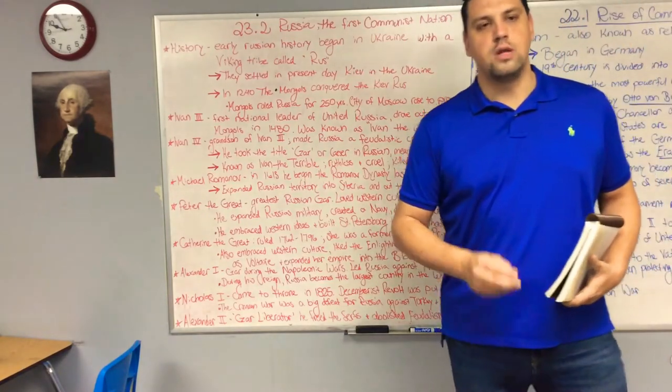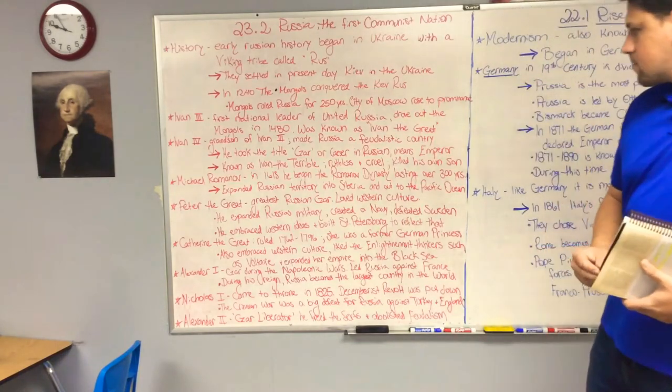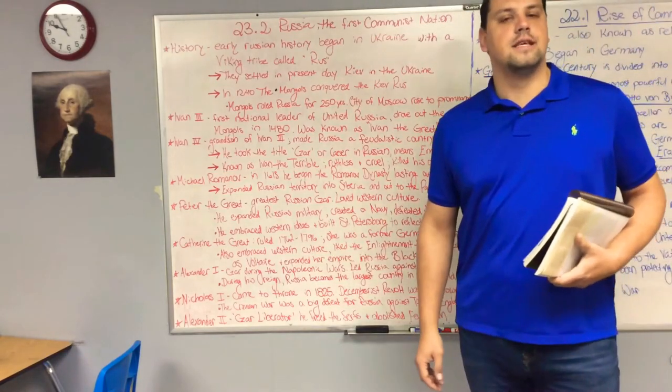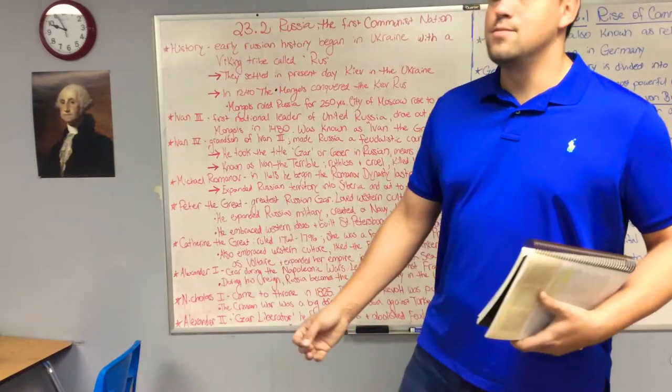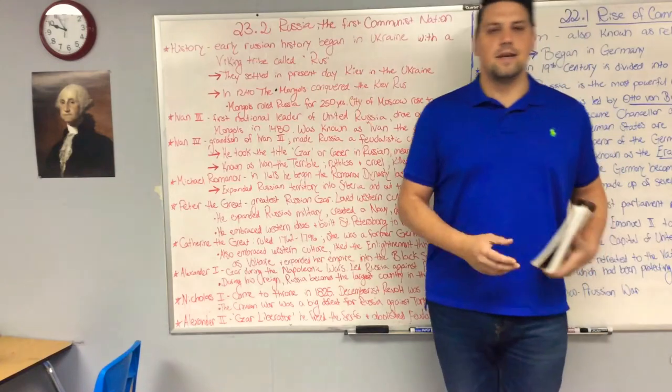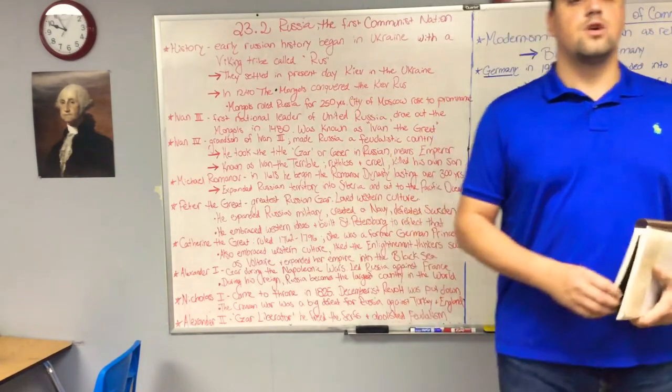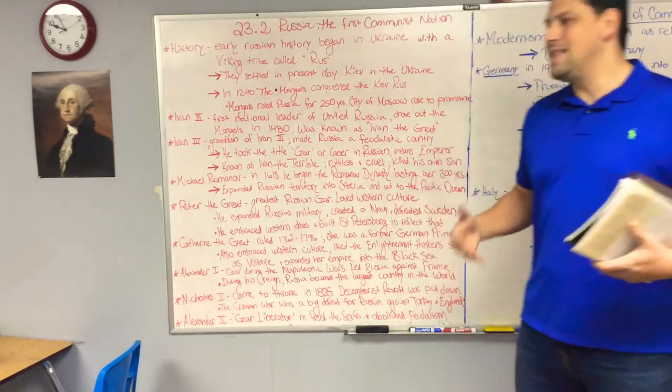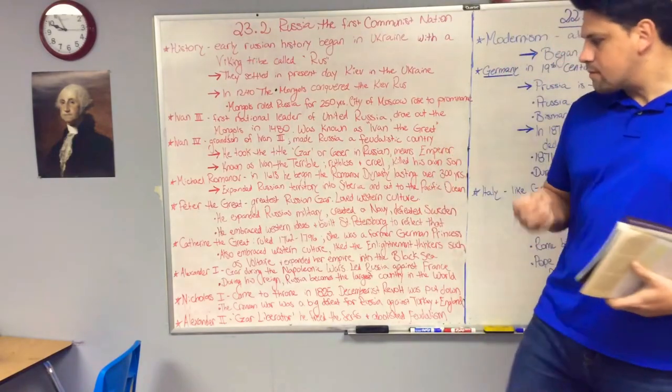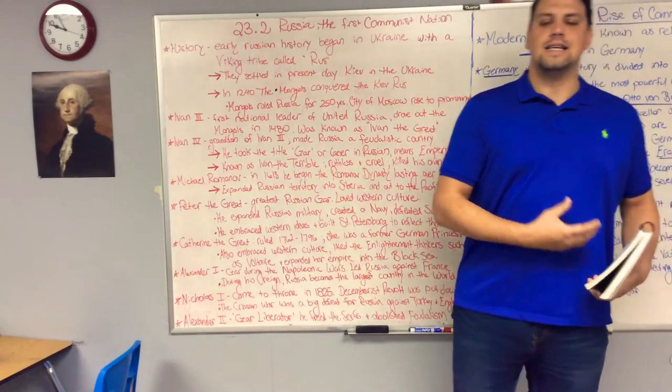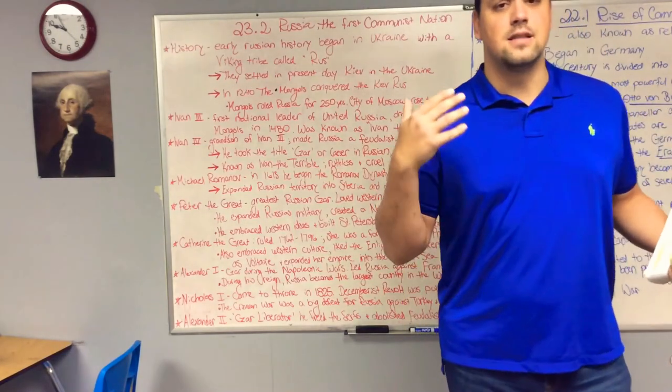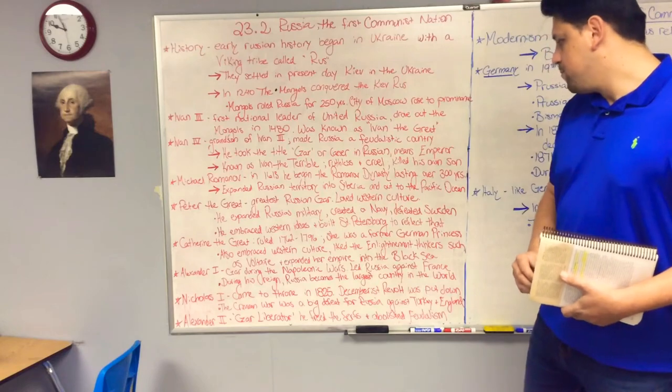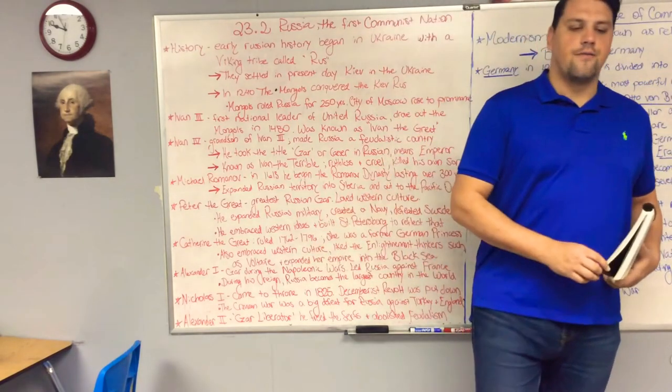After Alexander we have Nicholas the first. Nicholas the first comes to the throne after Alexander in 1825. Just as he comes to the throne, there is a revolt against him called the Decembrist revolt, where the people of Russia try to rise up against the czar and overthrow him. But that revolt is put down very quickly and is unsuccessful. It is from the beginning of his reign that Nicholas is paranoid and worried about people trying to overthrow him, because in the very early days of his reign there was a revolution trying to overthrow him.